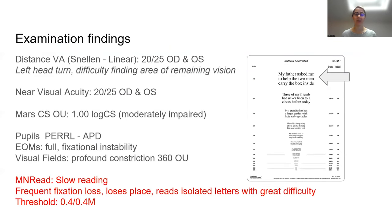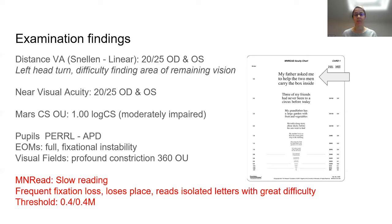Confrontation visual fields showed profound constriction 360 degrees in both eyes. Humphrey visual field printouts revealed severe profound constriction in the left eye worse than the right eye but certainly in both, explaining why she is having so much trouble functioning. We evaluated continuous text reading and she was able to read down to 0.4 over 4M but really struggled, keeping losing her place and getting jumbled up. We considered using a line guide to help her keep her place but she felt so depressed and overwhelmed she didn't want to revisit anything for visual reading.